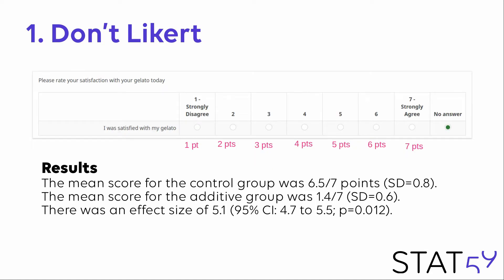Here, we sum up the points — 1 point for strongly disagree, 7 for strongly agree — and we are allowed to use the mean, the standard deviation, and the t-test. The mean score for the control group is 6.5 out of 7, the mean score for the additive group is 1.4 out of 7, with an effect size of 5.1, a 95% confidence interval of 4.7 to 5.5, and a p-value of 0.012. We know these linear numeric scales are robust to the continuous assumption.